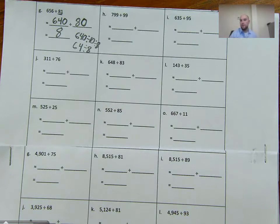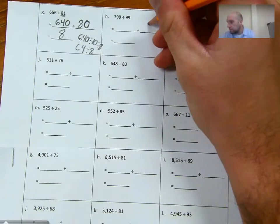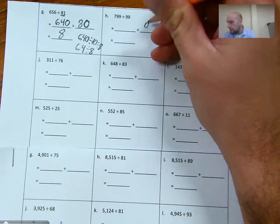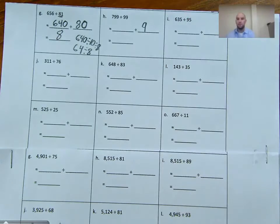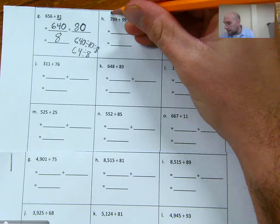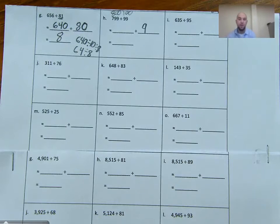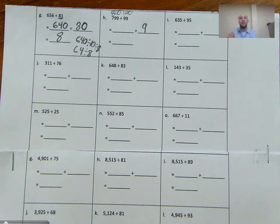If we look at the one next to it here, we have 799 divided by 99. Now this one kind of brings up a good point. You can do these problems in different ways and get a correct answer because we're estimating. Your estimate might be different than my estimate. So for me, I would round 99 to 100 and then I might round 799 to 800. And I know that 800 divided by 100, we learned that in a previous lesson, how to divide by 100. So I might just know that trick and I know that would be eight.